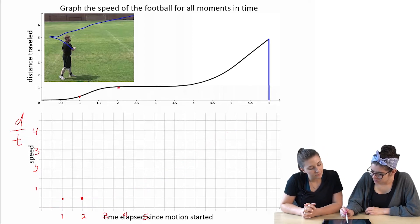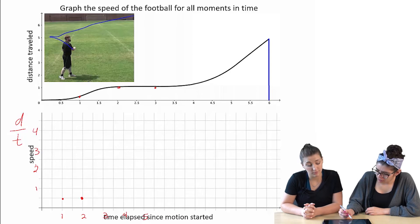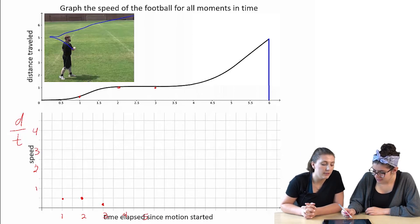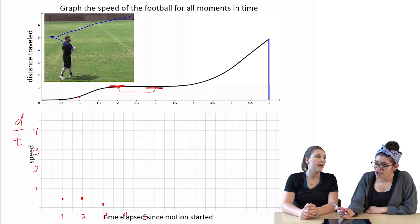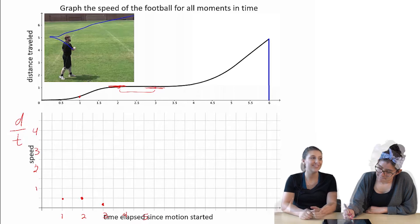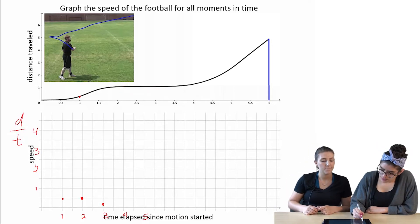And then at three, it would be... At one... One over three. Okay. Yeah. Oh, you know what? So it's the change in the distance over the change in time, and we're only doing a point. So instead of d over t, we want to do delta d over delta t?